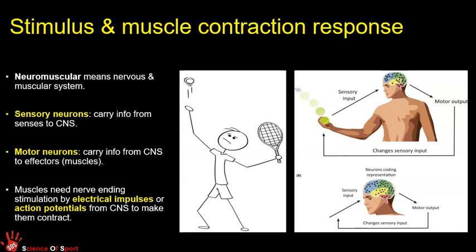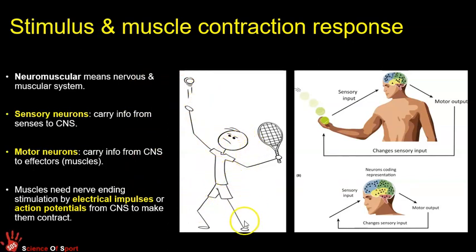The central nervous system is made up of the brain and spinal cord. From the hand, sensory information travels along a sensory nerve to the spinal cord and up to the brain. The brain, acting as the computer, analyzes everything and responds immediately by sending instructions along motor neurons to the muscles, enabling coordinated movement. Key terms: sensory neurons carry information in, motor neurons carry instructions out — all controlled by the CNS.